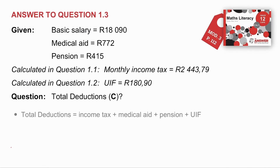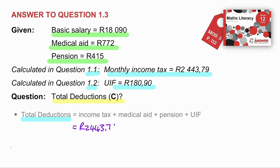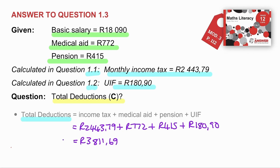Question 1.3: we're given the basic salary, and off the payslip you can also read his medical aid contribution and his pension fund contribution. In 1.1 we calculated his monthly income tax, and in 1.2 the UIF contribution. The question asks us to calculate total deductions, which is C. To calculate total deductions, we take income tax plus medical aid plus pension plus UIF: income tax R2,443, medical aid R772, pension fund R415, and UIF R180.90 — giving total deductions of R3,811.69. That's the answer for C.